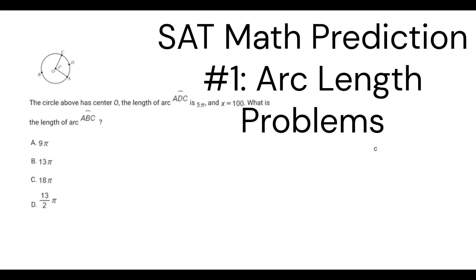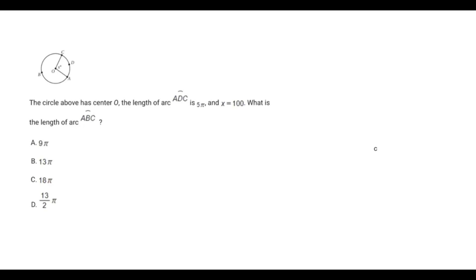The circle above has center O, the length of arc ADC, the minor arc, is 5π, and X equals 100. What is the length of arc ABC? All right, so if we look at this, what we want to do is set up a ratio.